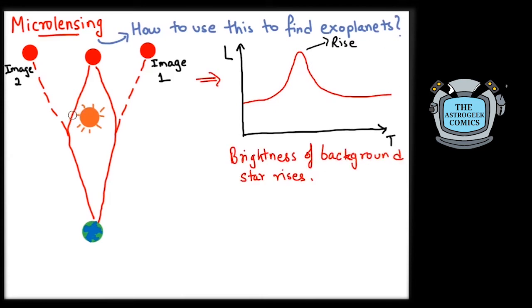Now, what will happen if there was an exoplanet around the closer foreground star? This planet has a gravity of its own, though lesser compared to the gravity of the star. So, as the foreground star bends the light of the background star, for a brief time as the planet passes between our line of sight and that of the light reaching us from the background star, it bends the light again. This causes a small dip in the rising brightness of the background star.